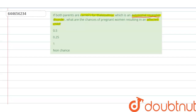Thalassemia is an autosomal recessive disorder, which means both recessive alleles must be present in a person suffering from thalassemia. Capital A is the normal allele and small a is the allele responsible for causing thalassemia. Both parents are carriers, so the male has genotype Aa and the female also has genotype Aa.